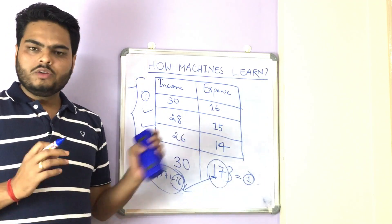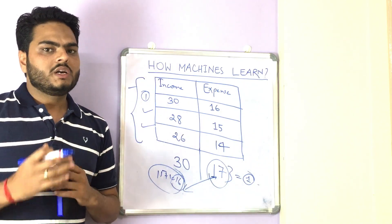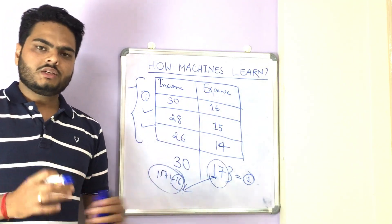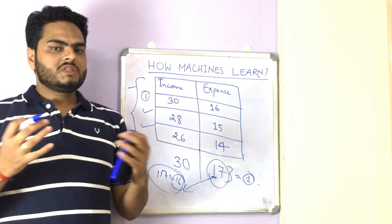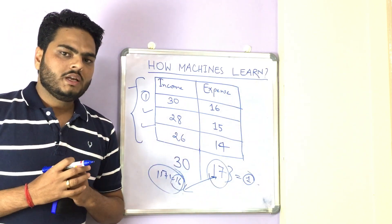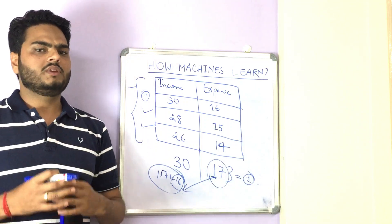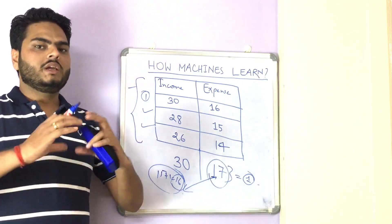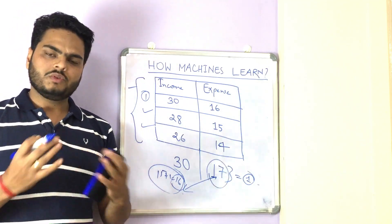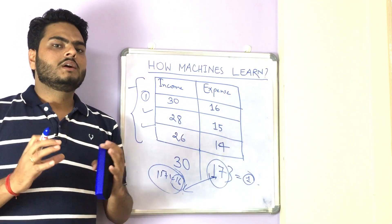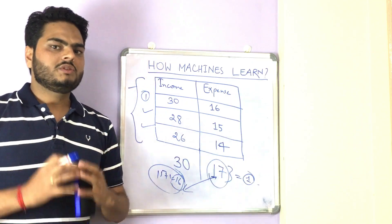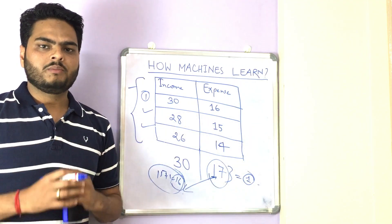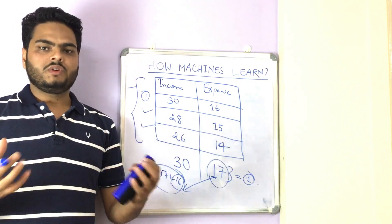Let me know in the comments which part you did not understand so I can explain it in my next video. To summarize: we discussed what machine learning is at its core, what types of machine learning exist, and we took a simple example of linear regression to understand how training and testing works. In my next video, I'll discuss different types of errors and how to know which model is good. Please like, comment, subscribe, and press the bell icon. See you in the next video — take care.